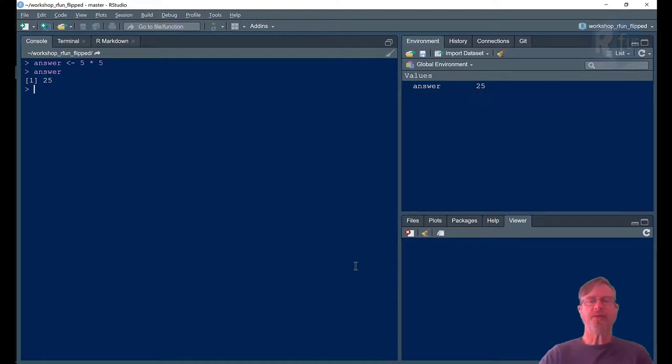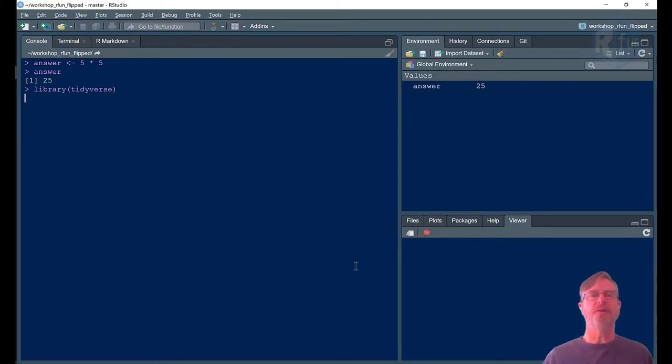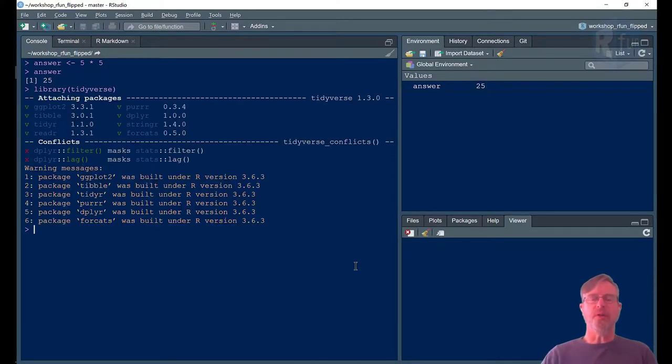All right. First of all, the pipe actually comes from a package called magrittr, but it's also available in the tidyverse. So the easiest way to get this to be possible to use this function is to make sure you have run the tidyverse libraries. Make sure you've loaded those libraries.